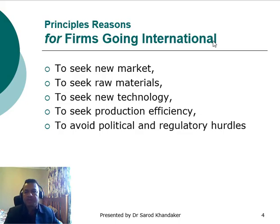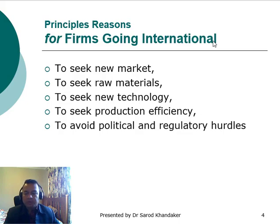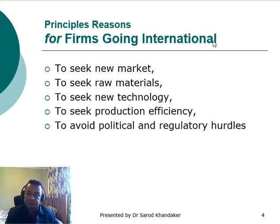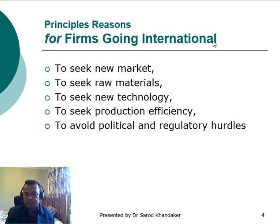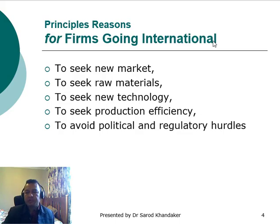Going international also helps the multinational corporation to seek cheaper raw materials than from the home country, and to seek new technology — for example, by going to a technologically oriented country like Japan. They can also seek production efficiency, since large-scale production is possible through multinational operations, resulting in lower production costs compared to competitors. Sometimes it also helps to avoid political and regulatory burdens.